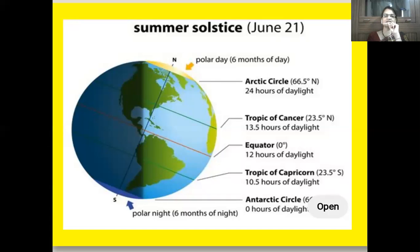First we will move towards the summer solstice. It relates to the position of Earth and the warm, hot season in the Northern Hemisphere. It is due to the inclination of Earth's axis and because sun rays fall directly on the Tropic of Cancer. It occurs on June 21st, which is the longest day.